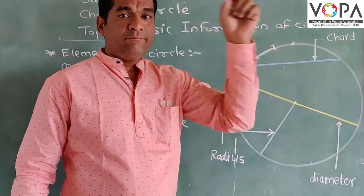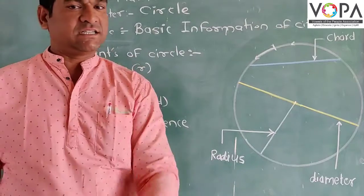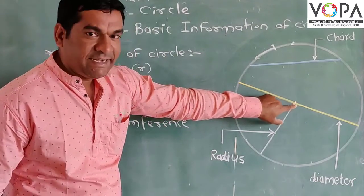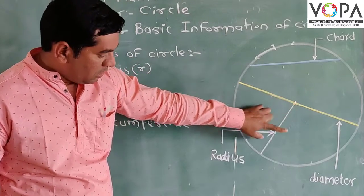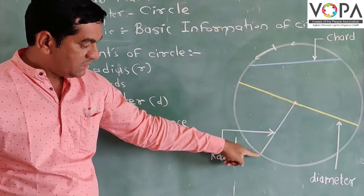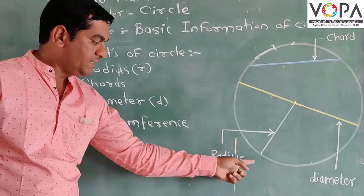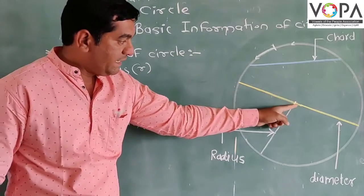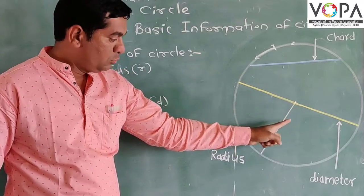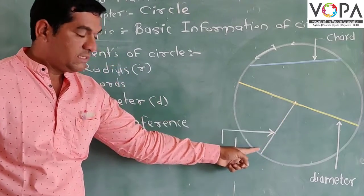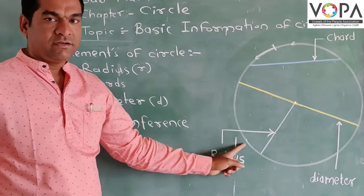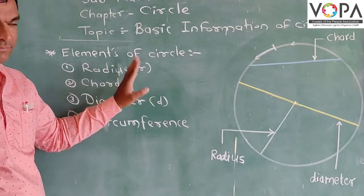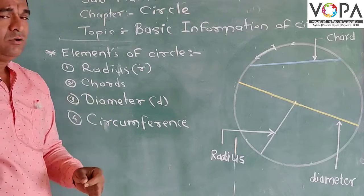The main information required to consider a circle is the radius. From the centre of the circle up to the circumference, that distance is called the radius. It is denoted by the smaller letter r.